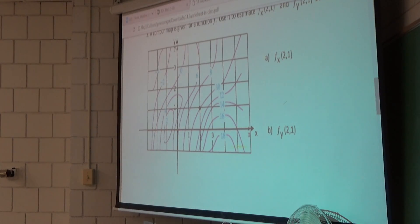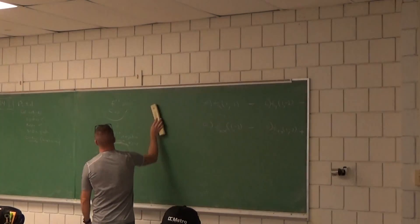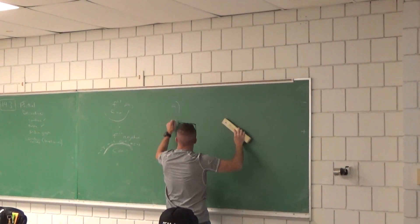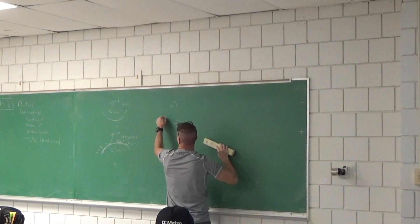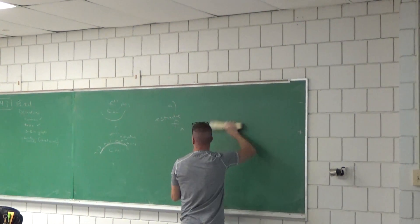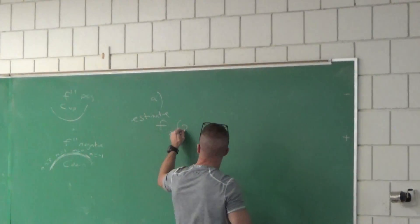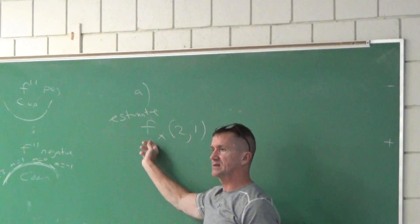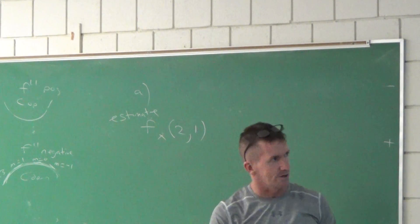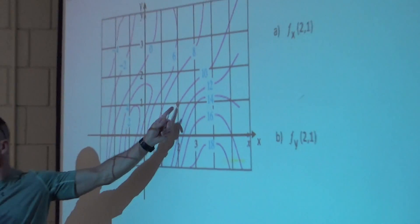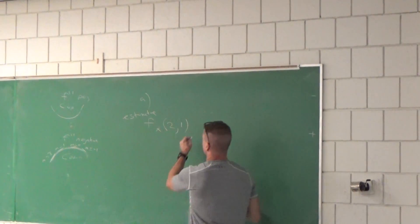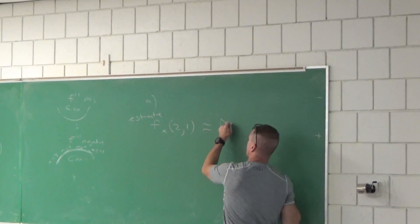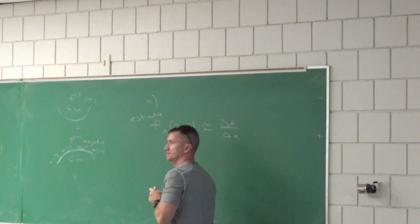What about partial derivatives from contour curves? We've done equations, tables, and three-dimensional graphs. Now let's look at a contour map. All we can do is estimate this value since we don't have an equation. We need to estimate fx at the point (2, 1) — the first partial derivative of f with respect to x. This is change in f values over change in x values.